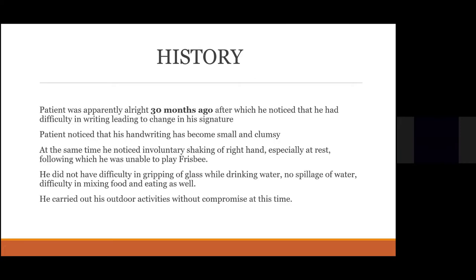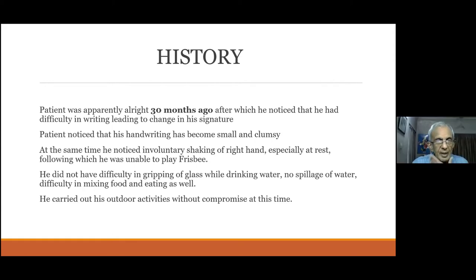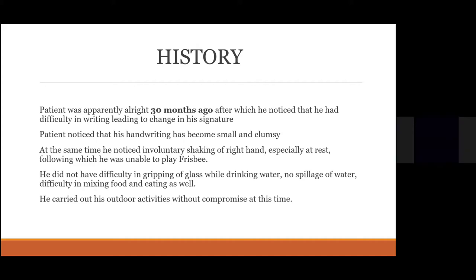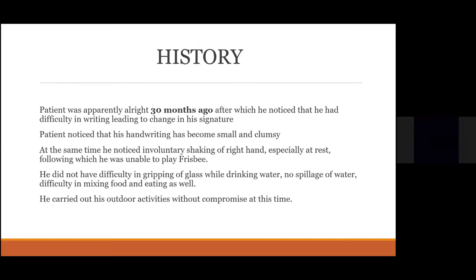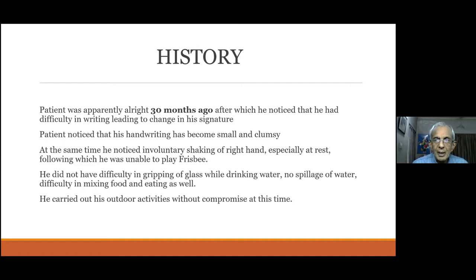The patient was apparently well 30 months ago, after which he noticed difficulty in writing leading to change in his signature. He noticed his handwriting had become small and clumsy, then noticed involuntary shaking of the right hand especially at rest, following which he was unable to play frisbee. The development of resting tremors confirmed that the writing problem was due to Parkinson's.